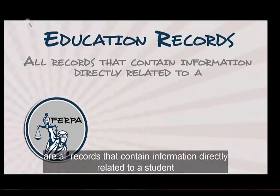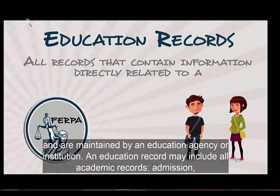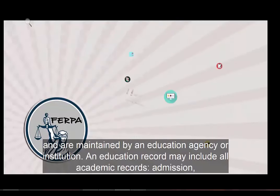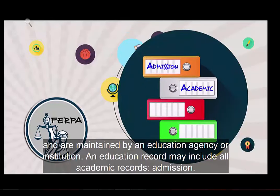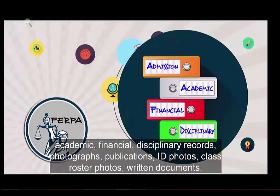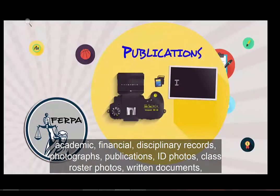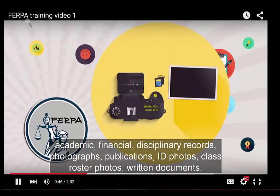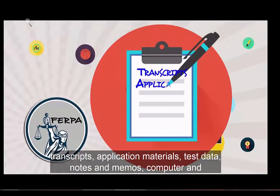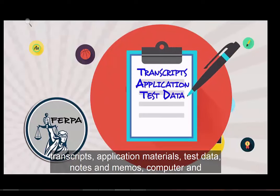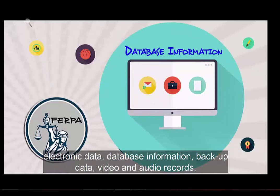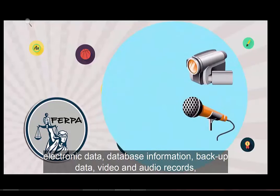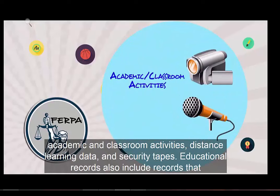Education records are all records that contain information directly related to a student and are maintained by an education agency or institution. An education record may include all academic records — admission, academic, financial, disciplinary records, photographs, publications, ID photos, class roster photos, written documents, transcripts, application materials, test data, notes, and memos — as well as computer and electronic data, database information, backup data, video and audio records, academic and classroom activities, distance learning data, and security tapes.